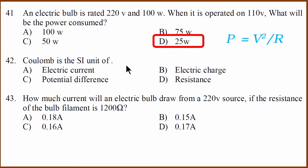What is the second question? This is a straightforward definition question. What is Coulomb? Coulomb is the SI unit of electric charge. Electric current is ampere, potential difference is volt, resistance is ohm. Coulomb is the SI unit of electric charge.